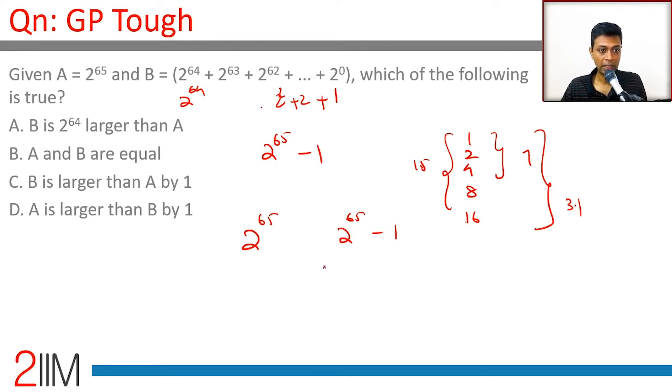A is 2 power 64 larger than A - wrong. A and B are equal - wrong. B is larger than A by 1 - wrong. A is larger than B by 1 - that's the right answer.